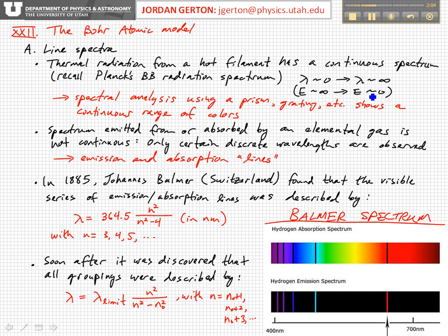Now, if you do a similar sort of experiment with a gas — an elemental gas, a gas of hydrogen, neon, xenon, sodium, et cetera — and you excite that gas somehow via, for example, an electric discharge, you'll find that the emission wavelengths, the colors that are emitted, come at very discrete wavelengths.